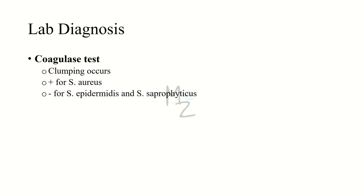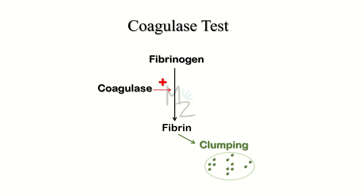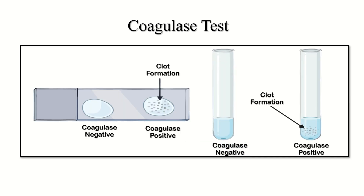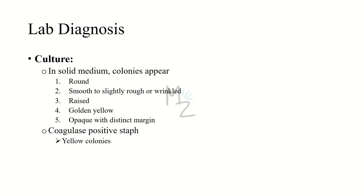Coagulase test: confirmed by clumping, but only positive for Staphylococcus aureus — negative for S. epidermidis and S. saprophyticus. Coagulase is a prothrombin-like molecule that converts fibrinogen into fibrin, causing clumping. S. aureus will clump; other species will not. A bacterium that clumps is coagulase positive; one that fails to clump is coagulase negative — confirmed on both slide and tube.